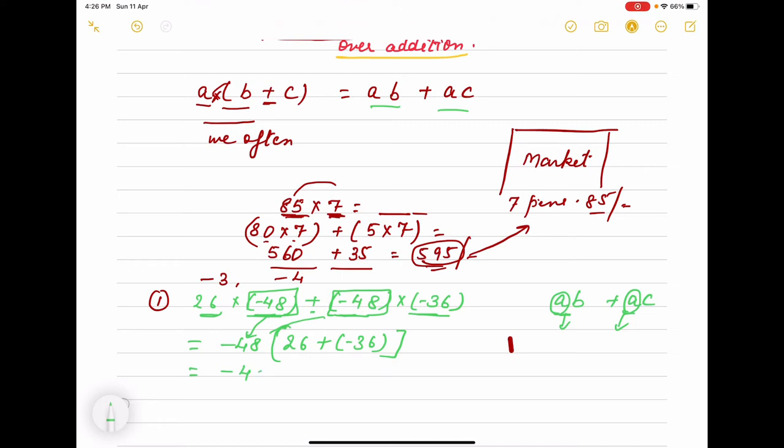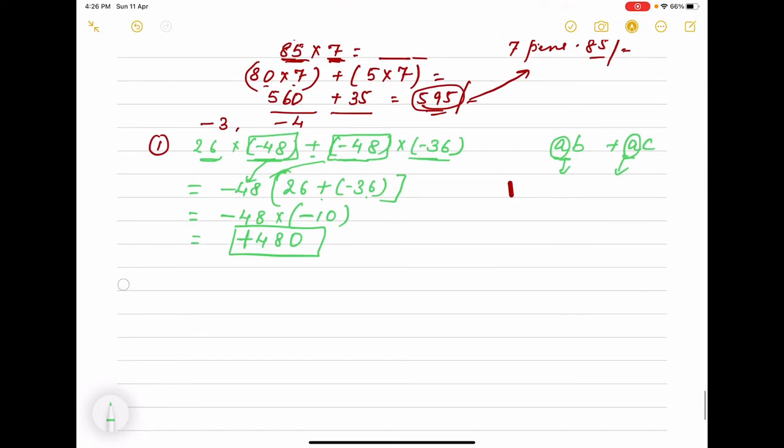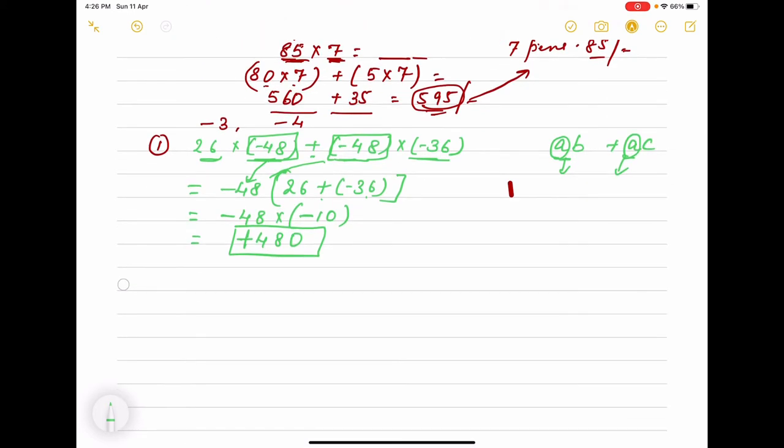Now it is minus 48 into 26 minus 36 will be we know the sign will be negative and we subtract it. Take the difference. So answer is minus and minus sign will be plus 480. I hope this will help you to find out.